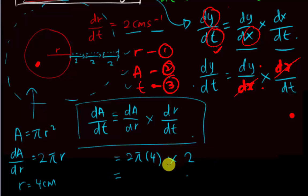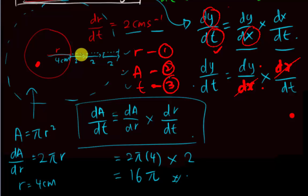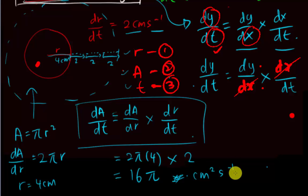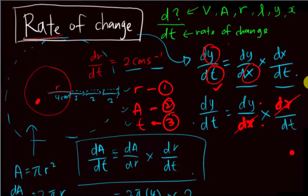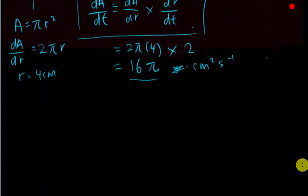Substituting in: dA/dt = 8π × 2 = 16π. So when the radius is 4 cm and increasing at 2 cm per second, the area increases at 16π cm² per second. The unit is cm² per second. This is the basic idea about rate of change. I'll give more examples in the next video, but I hope you understand what rate of change means and how to form the equations.